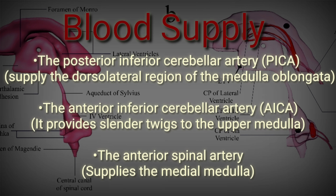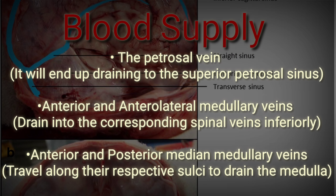The anterior inferior cerebellar artery branches from the basilar artery, which is formed by the union of the two vertebral arteries. It provides slender branches to the upper medulla. The anterior spinal artery, which is formed by two anastomosing branches of each vertebral artery, supplies the medial medulla.